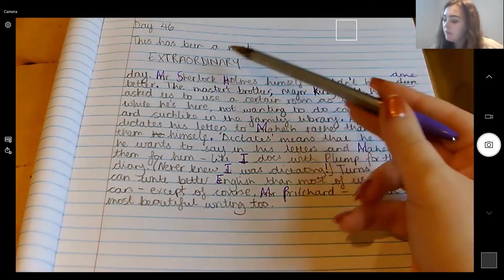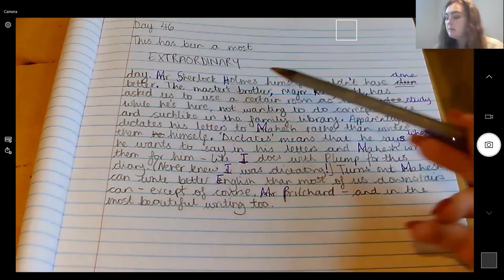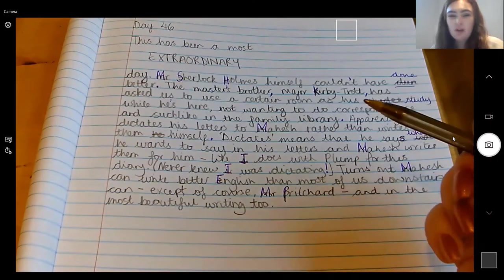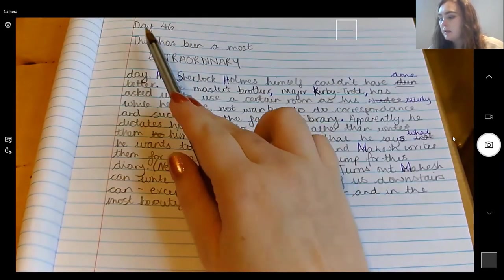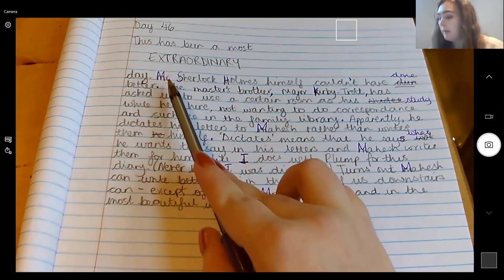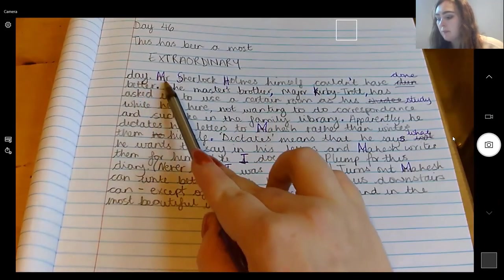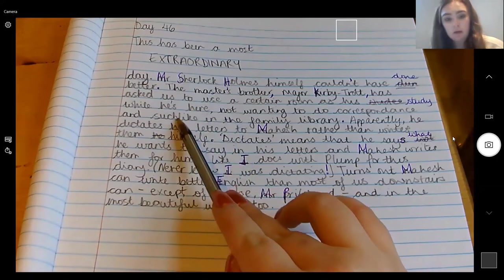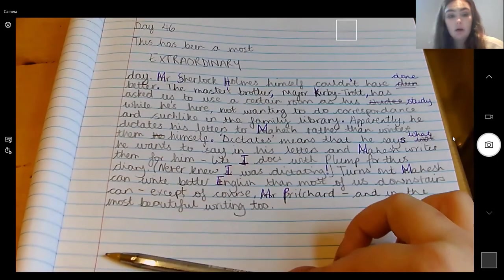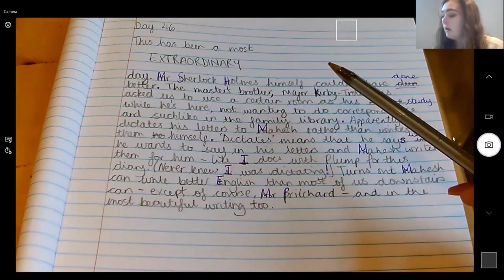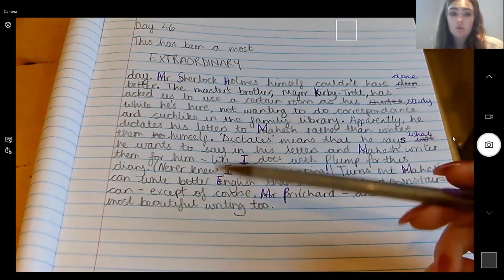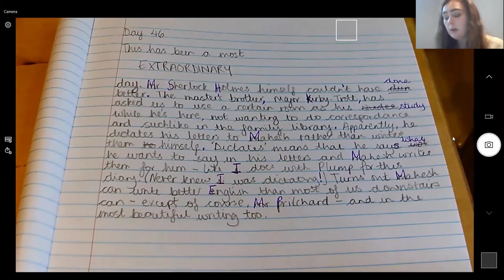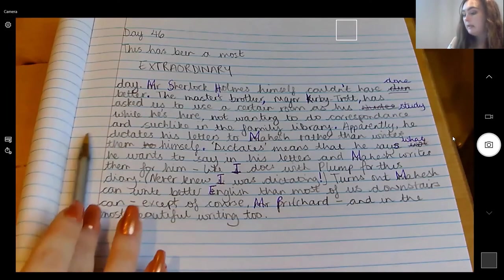Okay so that's part of our first part of our text. I would recommend doing this after every sentence you've written. So as you can see I did day 46, this has been the most extraordinary day, I read back through that. Mr Sherlock Holmes himself couldn't have done better, and when I got to that full stop I read back through and I corrected it. And I've done that all the way through where I've written the sentence, read it back through, and then corrected. And I'd like for you to do that as well to make sure that you really are remembering those capital letters, finger spaces, punctuation where needed, and to check your spelling. If you are unsure as to how to spell a word and there is an adult around who can help you, then please do ask them to help you spell it as well.